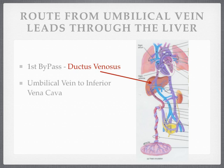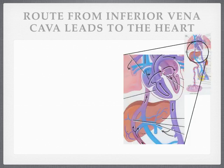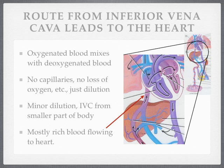Let us summarize. The ductus venosus allows blood to go from the umbilical vein over into the inferior vena cava. From that point, the blood is on its way to the heart — the inferior vena cava leads directly to it. We have had some dilution, but we are taking a short trip, and we are hoping that the heart can then help pump this blood where it needs to go.